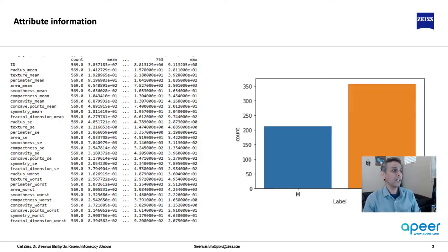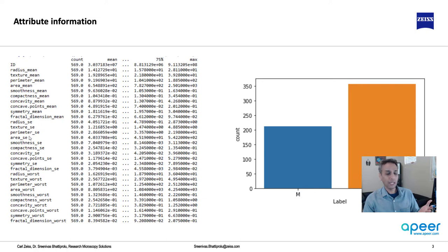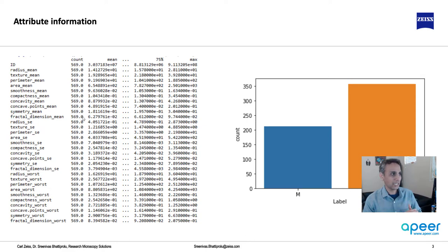You train on the training data, and then you take the model and evaluate it on the testing data. If you are curious about the attribute information, I believe there are 30 of these — mean radius, mean texture, mean perimeter area, and so on. There are a lot of attributes that are provided and measured, and we have a total of 569 data points — not a lot.